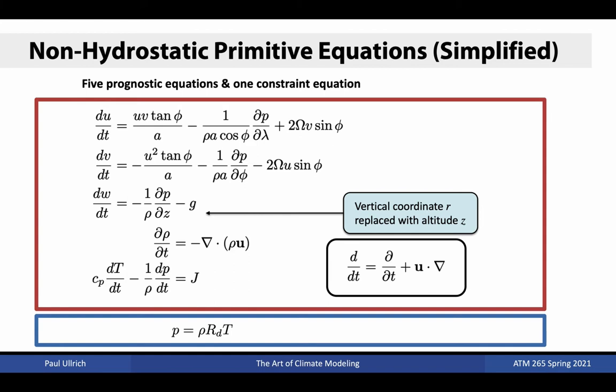With both the zero viscosity and shallow atmosphere approximations, the equations of motion reduce to a much simpler form. The terms we're most familiar with still show up: the Lagrangian time tendency of the dynamics on the left-hand side of the first three equations, and curvature, pressure gradient, gravity, and Coriolis terms on the right. The thermodynamic equations are unchanged under these approximations.